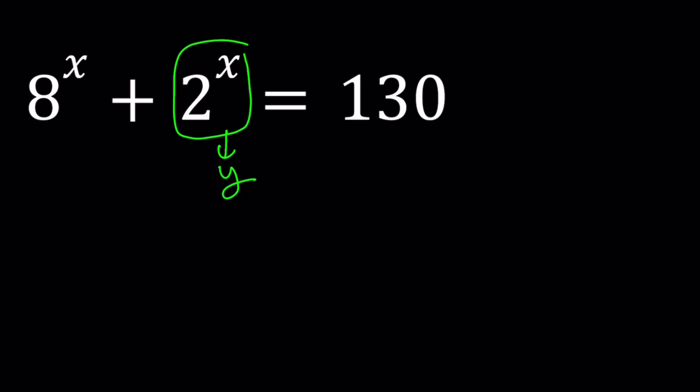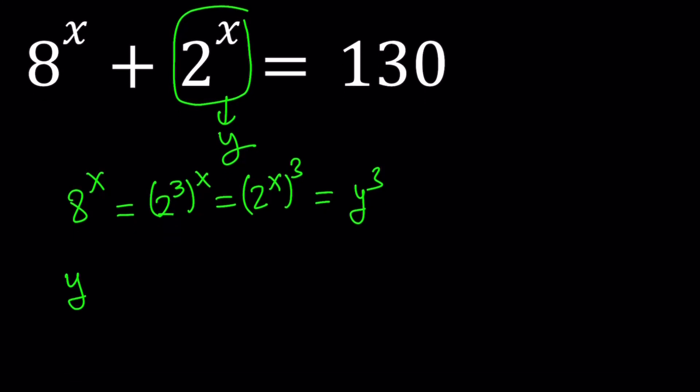And then 8 to the power x can be written as 2 to the power 3 to the power x, which can also be written as 2 to the power x to the third power. Therefore, 8 to the power x can be written as y cubed. So that's the critical part. So now we get y cubed plus y equals 130.